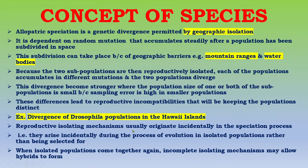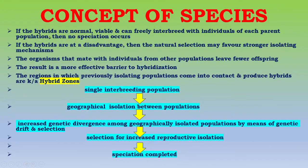Reproductive isolating mechanisms usually originate incidentally in the speciation process — they arise during the process of evolution in isolated populations rather than being selected for. When isolated populations come together again, incomplete isolating mechanisms may allow hybrids to form. If the hybrids are normal, viable, and can freely interbreed with individuals of each parent population, then no speciation occurs.